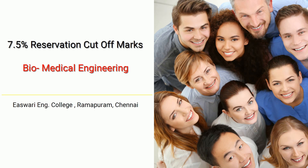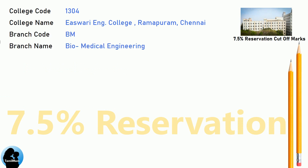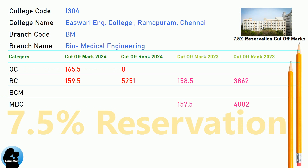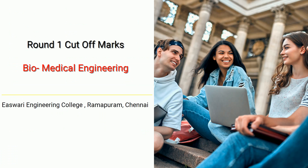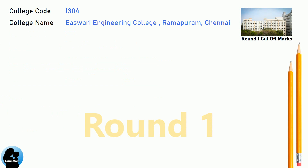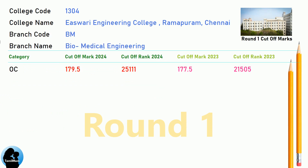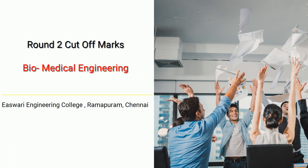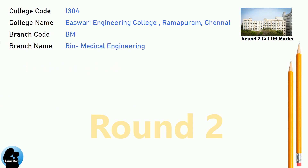DNA Cut-Off for Eshwari Engineering College in Biomedical Engineering. DNA 7.5 Reservation Cut-Off for Eshwari Engineering College in Biomedical Engineering. DNA Round 1 Cut-Off and DNA Round 2 Cut-Off for Eshwari Engineering College in Biomedical Engineering.